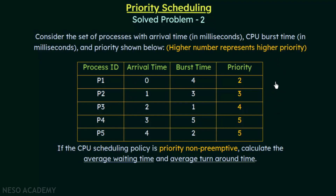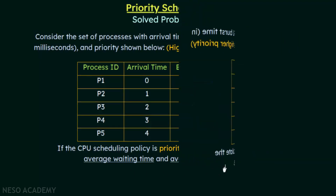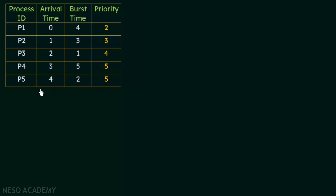Given this information, our task is to calculate the average waiting time and the average turnaround time. I have copied down the same table here again. The first step is to form the Gantt chart for this set of processes. Remember that the question states this is non-preemptive priority scheduling. When one process gets the CPU for its execution, until it completes, no other process will take the CPU away from it — it will never be preempted. Keep this in mind when forming the Gantt chart.